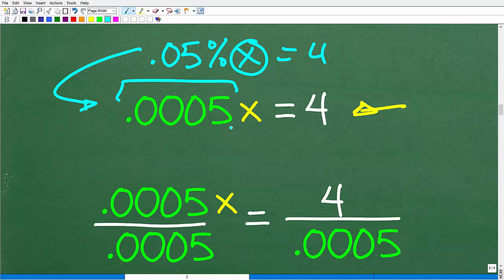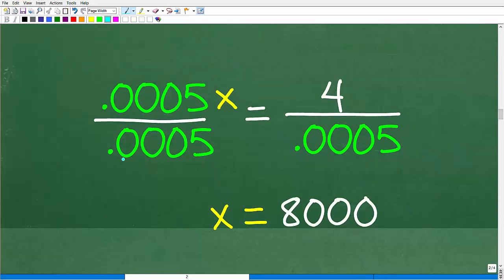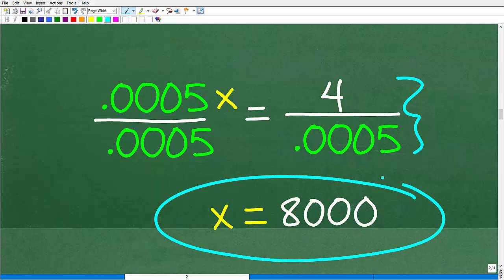To solve for x, this is pretty straightforward. All we need to do is divide both sides of the equation by 0.0005. You can see that work right here. And then we just go into our calculator, take 4, divide it by 0.0005, and you get 8,000. So, x is equal to 8,000.